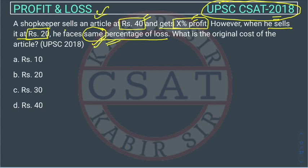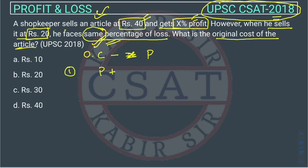What is the original cost of the article? Let's suppose the original cost is p. In the first case, he sells the article with x percent profit. So the selling price is p plus x percent of p, and this selling price is given as rupees 40.